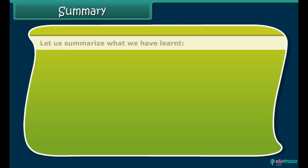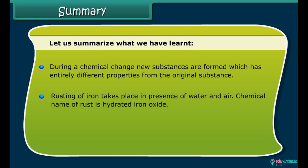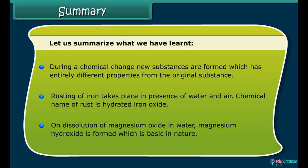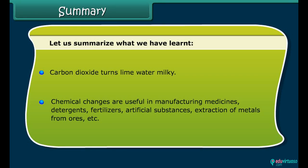Summary: During a chemical change, new substances are formed which have entirely different properties from the original substance. Rusting of iron takes place in the presence of water and air; the chemical name of rust is hydrated iron oxide. On dissolution of magnesium oxide in water, magnesium hydroxide is formed, which is basic in nature. Carbon dioxide turns lime water milky. Chemical changes are useful in manufacturing medicines, detergents, fertilizers, artificial substances, and extraction of metals from ores.